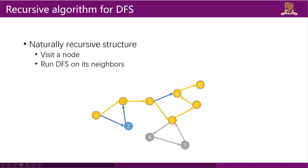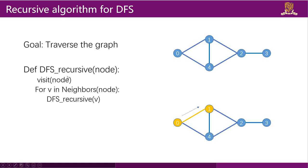DFS has a naturally recursive structure. If we visit node 1, we can ignore node 0 and node 2 — we are applying a new DFS on node 1. So the recursive algorithm is: visit a node, then run DFS on its neighbors. For simplicity we assume the goal is to traverse the whole graph, so no stop condition is needed.